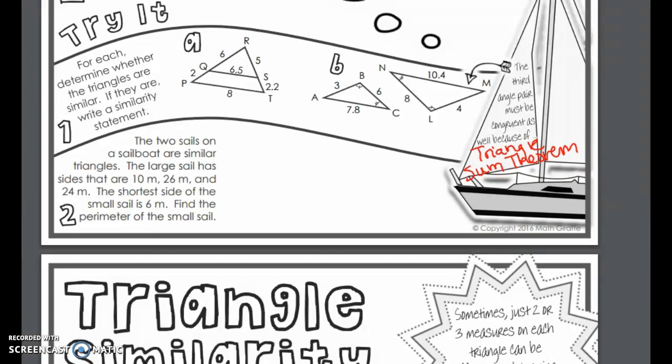Now, two sails on a sailboat are similar triangles. The large sail has sides that are 10. I'm going to draw... We always draw pictures when we can. 10, 26, and 24. I'm going to do 10, 26 at the long side, and 24 here. Okay. The shortest side of the small sail is 6. Okay. No, I should always label. Of course we know that.